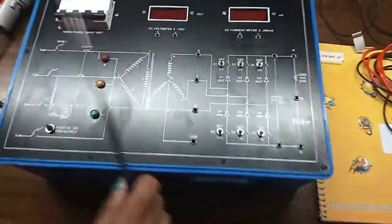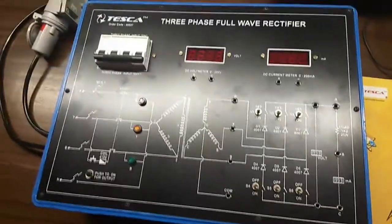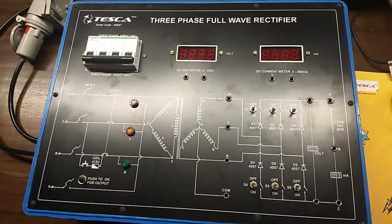Today, we are going to show you our 3 phase full wave rectifier trainer kit order code is 46557.